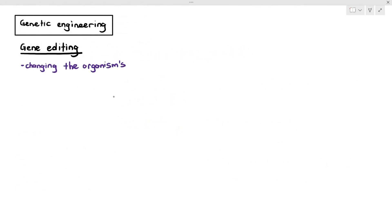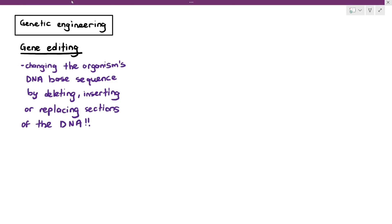Gene editing basically means that you are changing the organism's DNA base sequence by either deleting, inserting, or replacing sections of the DNA. If you do not understand that statement, let's just use an example. Now, I have a gene here, and this gene has two particular alleles.